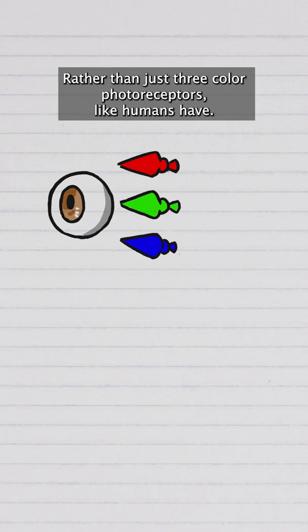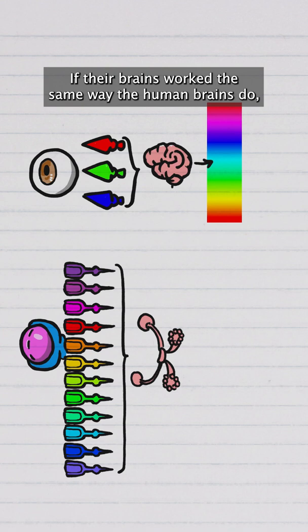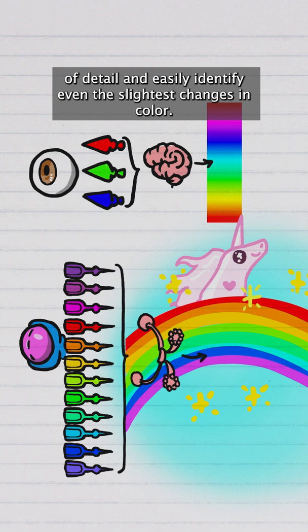If their brains work the same way that human brains do, that would mean that they would be able to see the world in an exquisite level of detail and easily identify even the slightest changes in color.